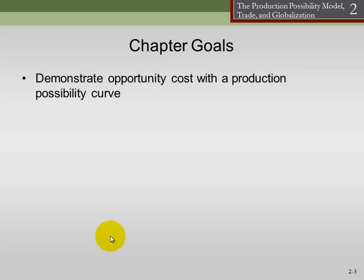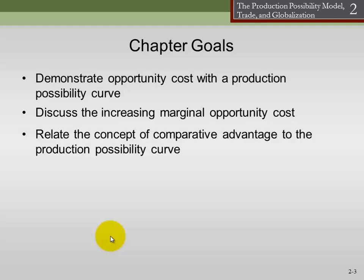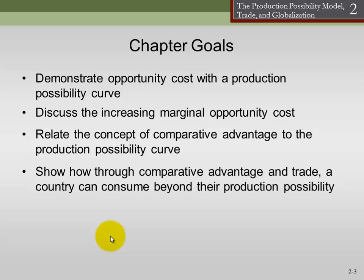The chapter goals are: first, I want you to be able to demonstrate opportunity costs with the production possibilities curve — you'll show how you have to give something up in order to produce more of another good. I want you to discuss the increasing marginal opportunity costs demonstrated by the shape of the production possibilities curve. Relate the concept of comparative advantage to the production possibilities curve. Comparative advantage is actually a very important topic, particularly in trade. Show how, through comparative advantage in trade, a country can consume beyond their production possibilities.